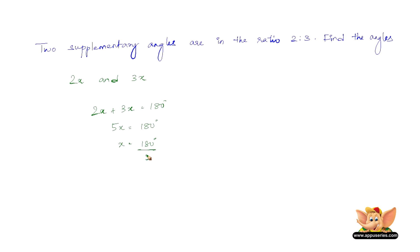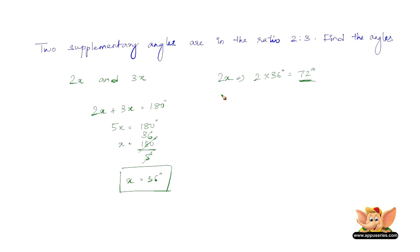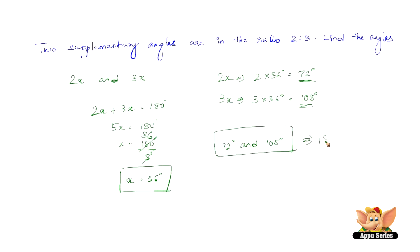So 5x equals 180 degrees, and x equals 180 divided by 5, which is 36 degrees. One of the angles is 2x, so 2 times 36 equals 72 degrees. The other angle is 3x, so 3 times 36 equals 108 degrees. The two angles are 72 degrees and 108 degrees, and they are supplementary because they sum to 180 degrees.